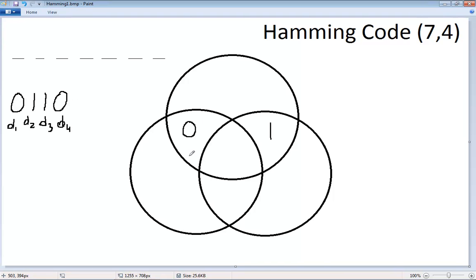This is our D1, this is D2, this is D3, and this is D4. So 0, 1, 1, and a 0.